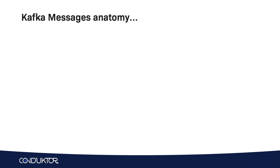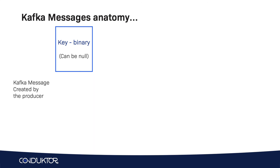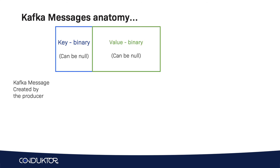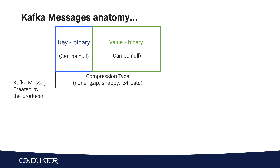Now let's discuss what a Kafka message looks like. Kafka messages are created by the producer. The first important concept is the key — it can be null and its type is binary (zeros and ones), but it can represent strings and numbers. We also have the value, which is the content of your message, and this can also be null. The key and value are two of the most important things in your message, but there are other fields as well.